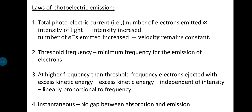The second important concept is threshold frequency. No electrons are emitted from the metal until the frequency of the incident light reaches a certain minimum value. That minimum value is known as the threshold frequency. If you apply the threshold frequency or greater, electrons are ejected. If you give a frequency less than the threshold frequency, no electrons are ejected.